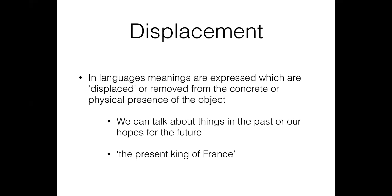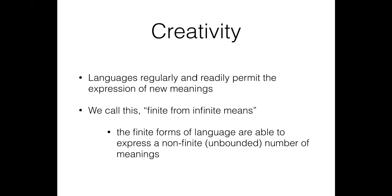The classic example of displacement in linguistics is the 'present king of France.' As you probably know, France is not a monarchy, but you can still talk about the present king of France even though there actually is no present king of France. In a parallel possible world where France is a monarchy, there could be a present king of France — and you perfectly understand the meaning even though there's no real king of France as we speak.